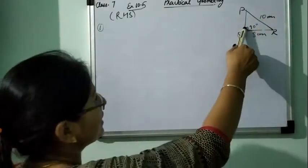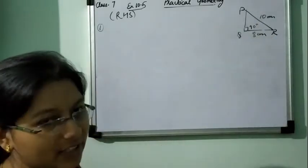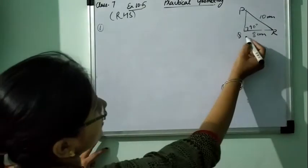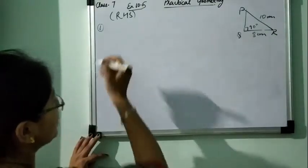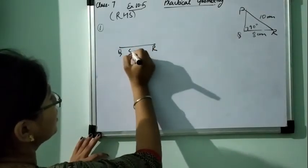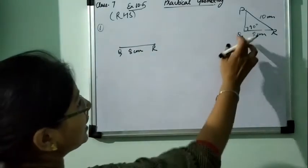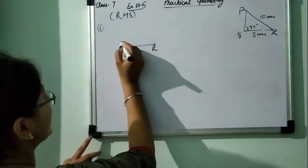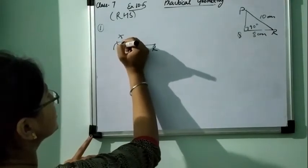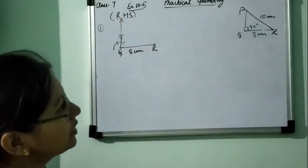As you all can see, 90 degree right angle is given, hypotenuse is given and any one side is given. So what we will do, first of all, we will draw this base. Draw a line segment QR is equal to 8 cm. Now at Q draw an angle of 90 degree. First semi circle, then 2 arcs, 2 more arcs. Then on joining this, we can have 90 degree.